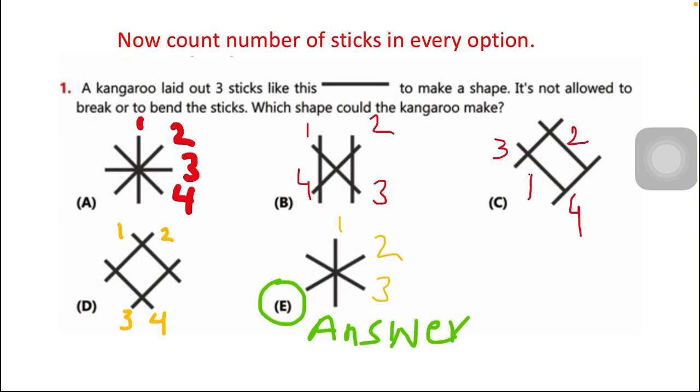What about the E option? Let's count the number of sticks. One, two, three. Again, I am not counting the other side of the sticks. So only three sticks are used in this option and three sticks are crossing through a single point. The possible and correct answer is option E.